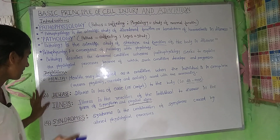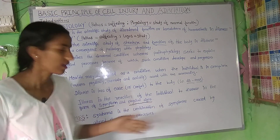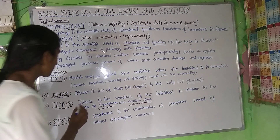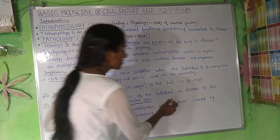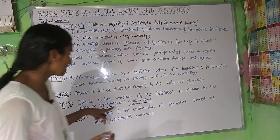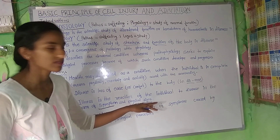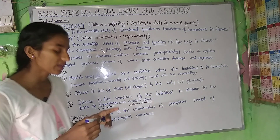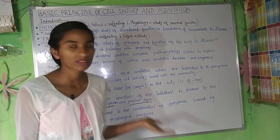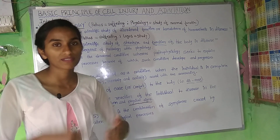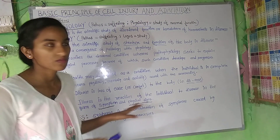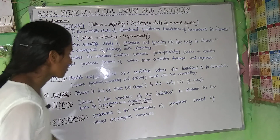Disease and illness are not the same, though they are related. Illness is the reaction of the individual to a disease in the form of symptoms and physical signs. A symptom is a complaint which the patient tells us — the complaints of the patient are symptoms. A physical sign is what the clinician finds after check-up — those indications which are elicited by the physician.